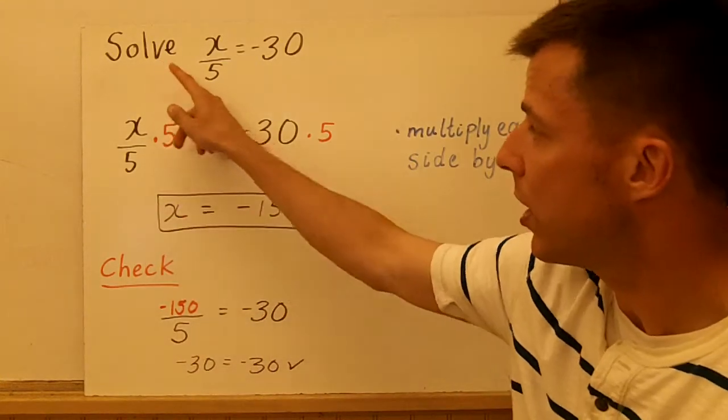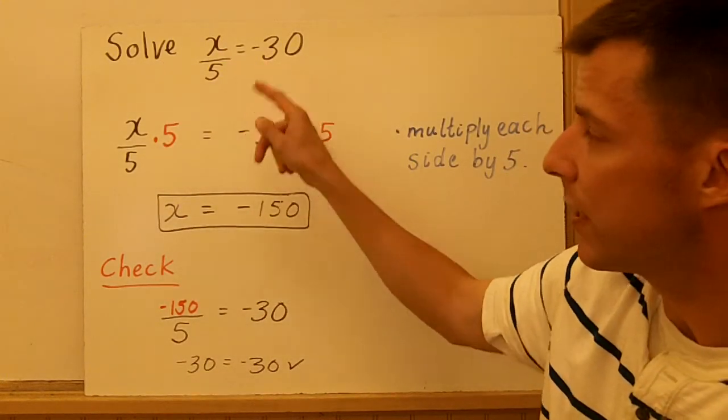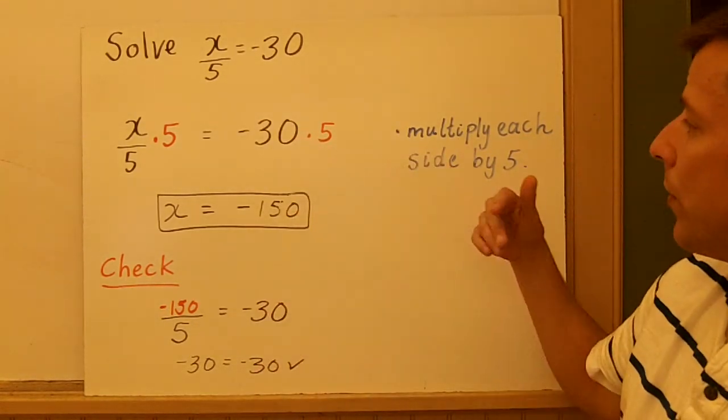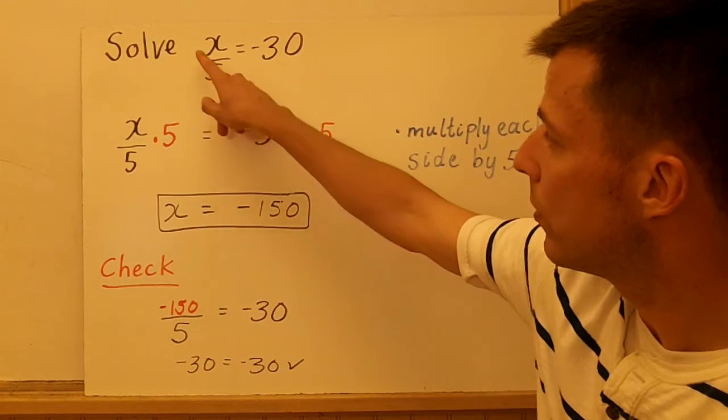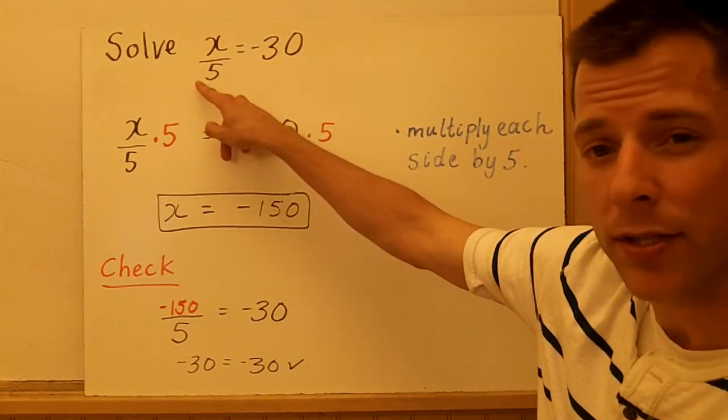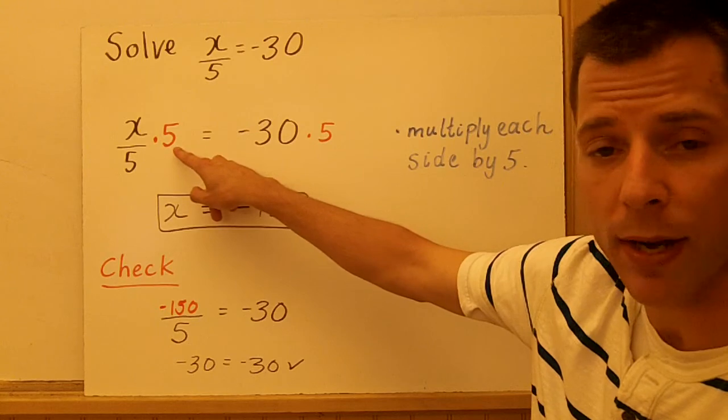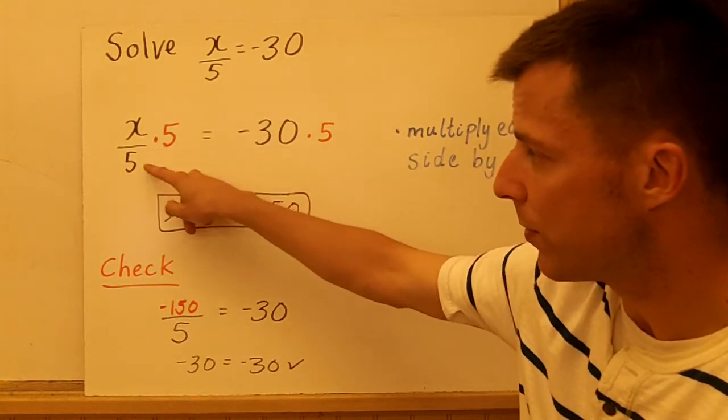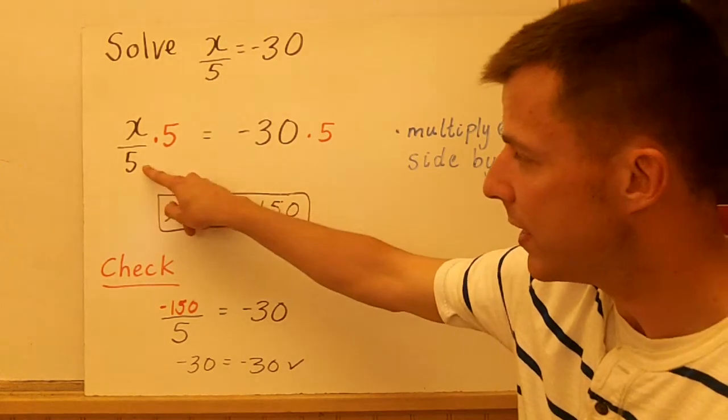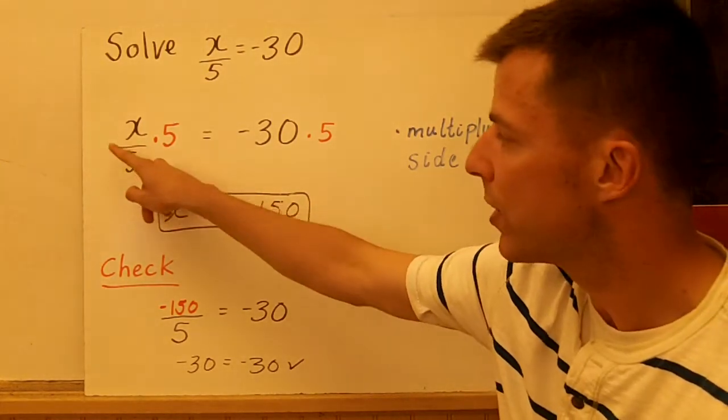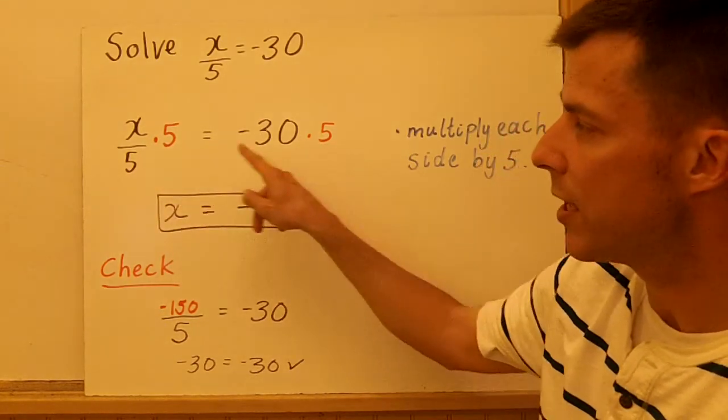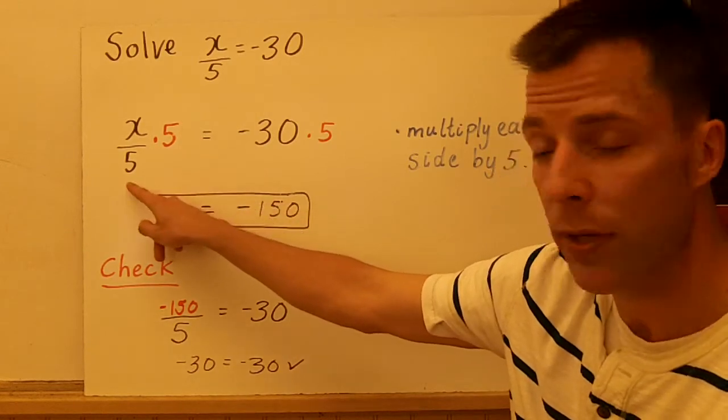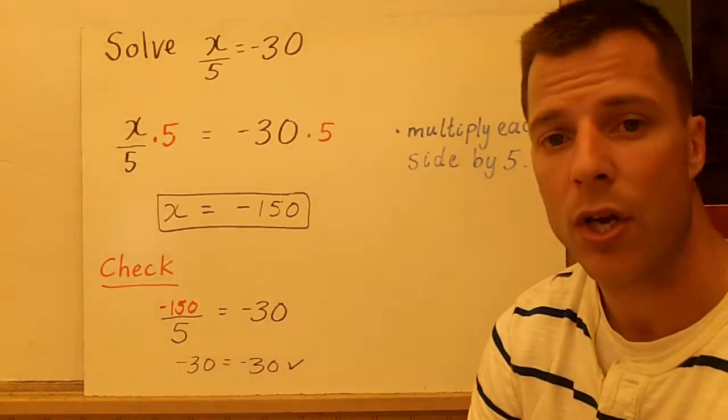Our next example we're going to solve x/5 equals negative 30. Now, x divided by 5, to undo division, we multiply. So x over 5 is the same thing as saying 1/5 x, so we're going to multiply each side by the reciprocal. It's important to realize if you have a fraction here and you're multiplying, multiply by what's in that denominator because they will cancel out. So x over 5, you're going to multiply each side by 5. So when you multiply each side by 5, the 5s become 1, and you're left with x equals negative 150.